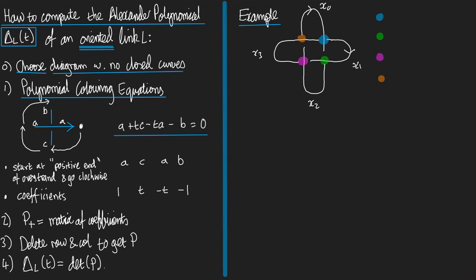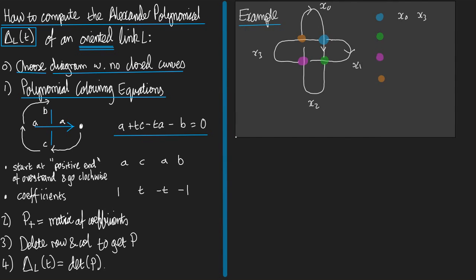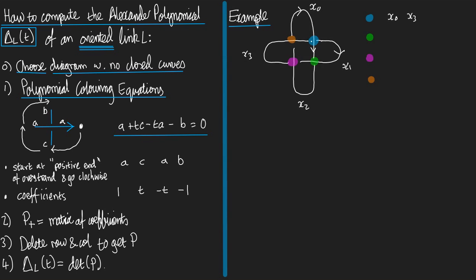I need to know which is the positive end of the overstrand. If you look at it, you see that's the one pointing down. So let me write down the name of my arcs going clockwise: x0. Next round, that's x3. Let's move everything to the left. x0, x3, x0, x1. And what are the coefficients? They go 1 + t - t - 1 = 0.